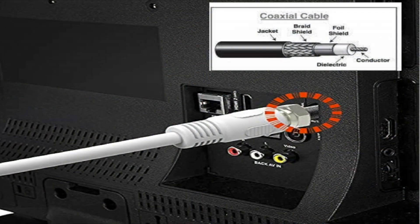Here we have a coaxial cable connected to a television. Coaxial cables are made to prevent external electromagnetic interference from entering the cable and affecting its performance.